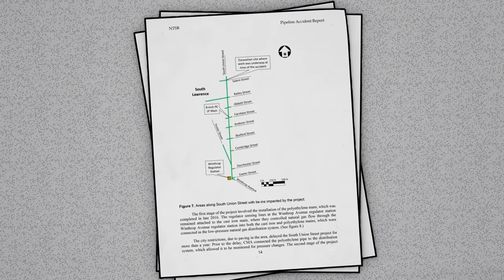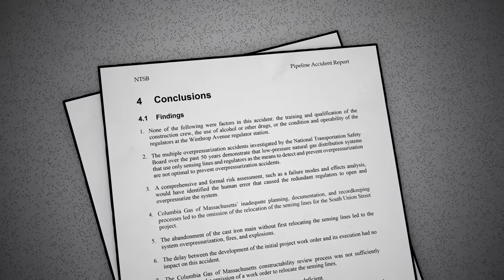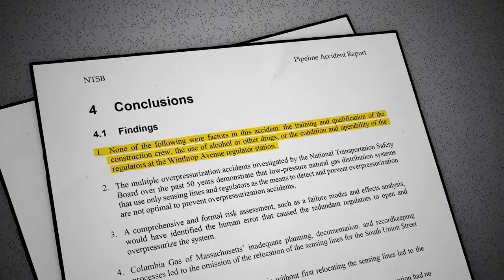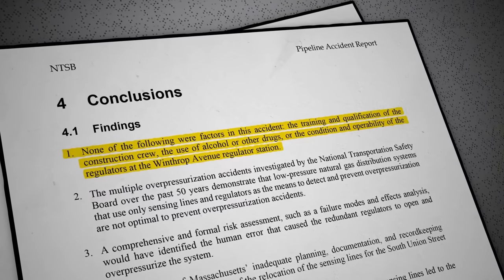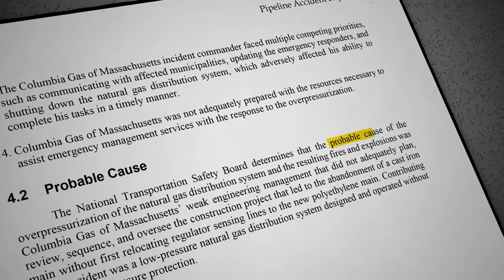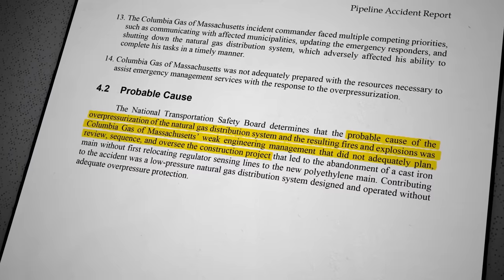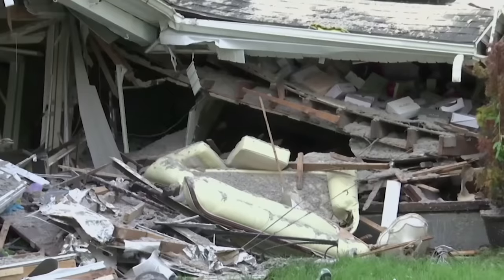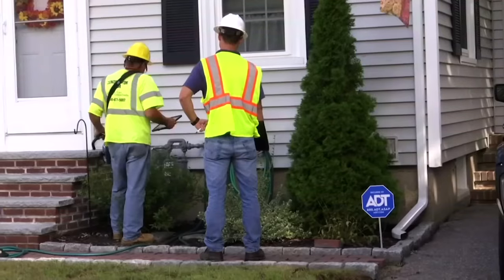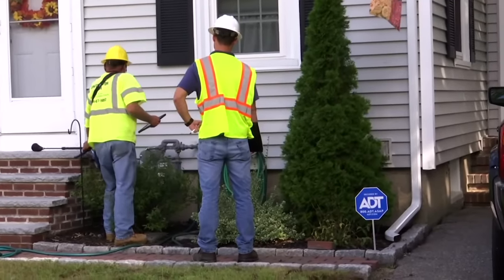Most importantly, the NTSB did not mince words on who they found at fault for the disaster. They were clear that the training and qualifications of the construction crew or the condition and operability of the regulators at the Winthrop Avenue regulator station were not factors in the event. Rather, they found that the probable cause was Columbia Gas of Massachusetts weak engineering management, that did not adequately plan, review, sequence, and oversee the project. To put it simply, they just forgot to include moving the sensing lines when they were designing the pipeline replacement project, and the error wasn't caught during quality control or constructability reviews. NiSource, the parent company of Columbia Gas of Massachusetts, estimated claims related to the disaster exceeded a billion dollars, an incredible cost for weak engineering management. Ultimately, Columbia Gas pleaded guilty to violating federal pipeline safety laws and sold their distribution operations in the state to another utility. They also did a complete overhaul of their engineering program and quality control methods.